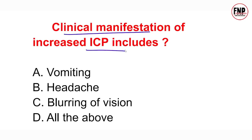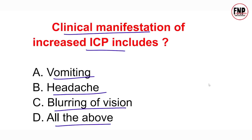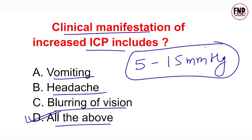Kisi client mein intracranial pressure badhne par kaun kaun se signs and symptoms dekhne ko milenge — vomiting, headache, blurring of vision, ya yeh sabhi? The correct answer is Option D — all of the above. Agar kisi client ka intracranial pressure 5 se 15 mmHg ke beech hai tab normal hai, lekin isse zyada pressure badhta hai to vomiting, headache, blurring of vision, aur irritation jaise findings dekhne ko milti hain.